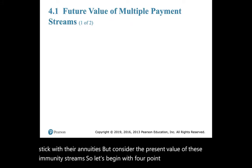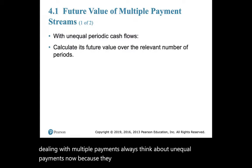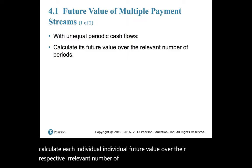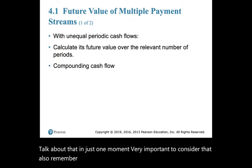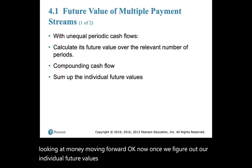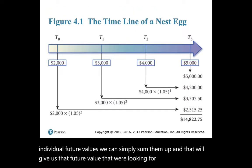Starting with 4.1: when dealing with multiple payments, always think about unequal payments. Because they're unequal, it's really important to calculate each individual future value over their respective number of periods. Also remember that we're always compounding our cash when looking at money moving forward. Once we figure out our individual future values, we can simply sum them up to get the total future value we're looking for.